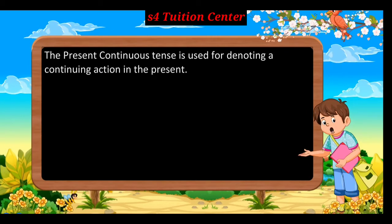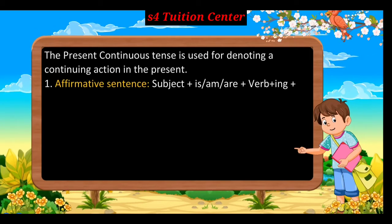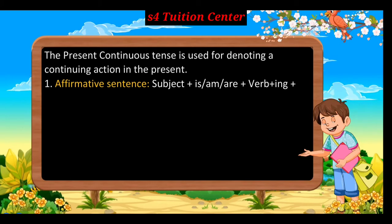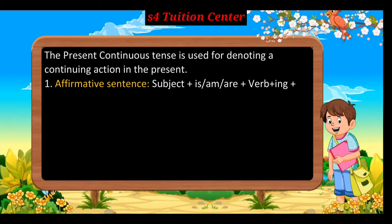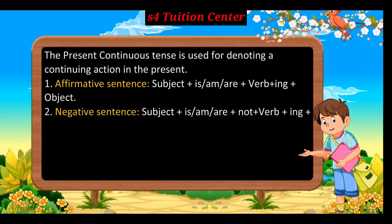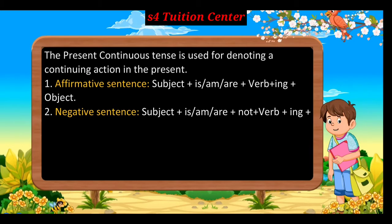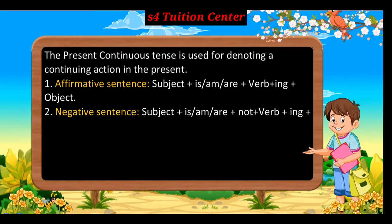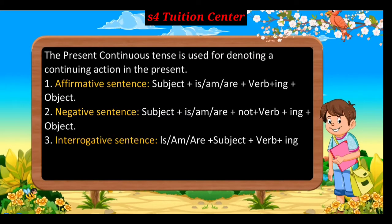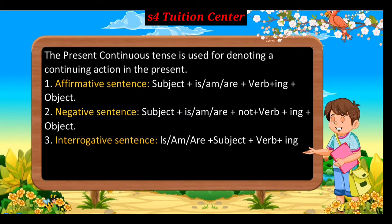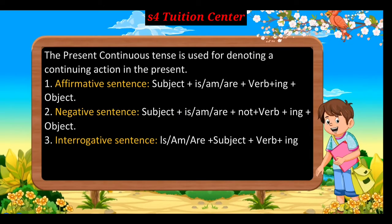Present Continuous Tense: The present continuous tense is used for denoting a continuing action in the present. First, affirmative sentence: subject + is/am/are + verb + ing + object. Second, negative sentence: subject + is/am/are + not + verb + ing + object.